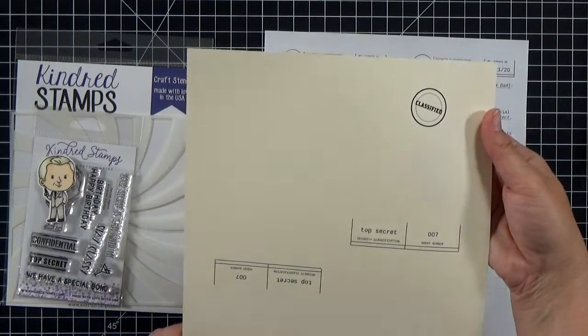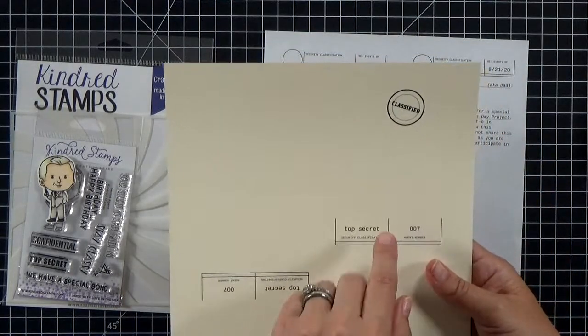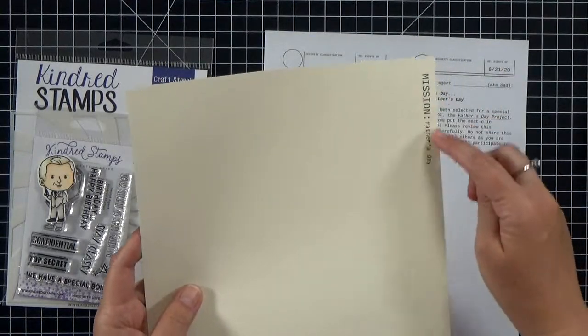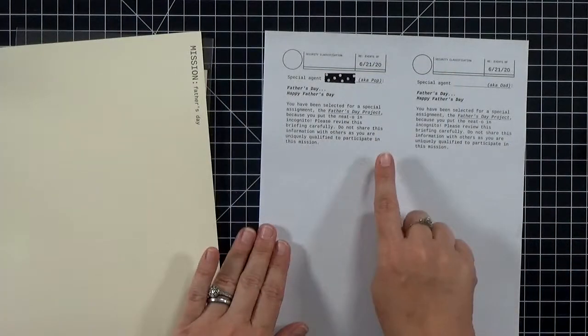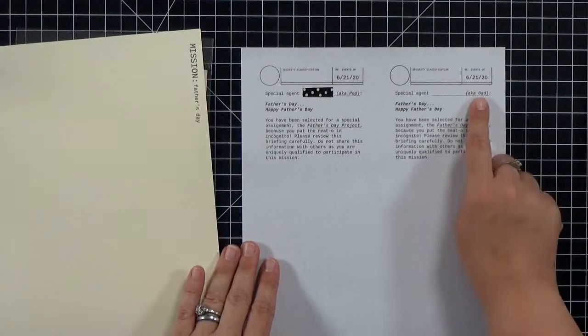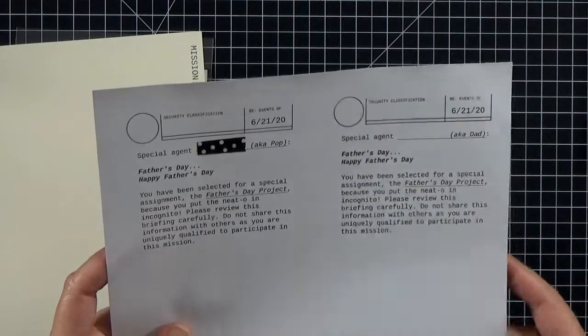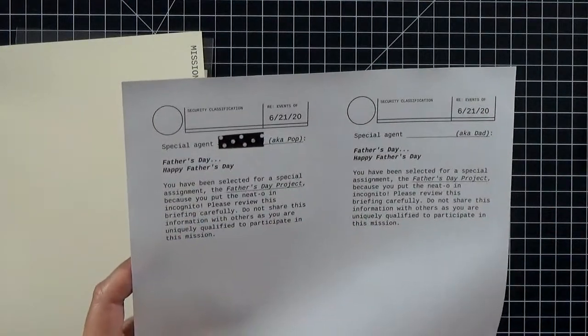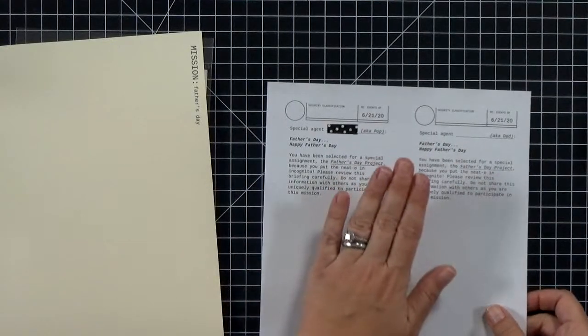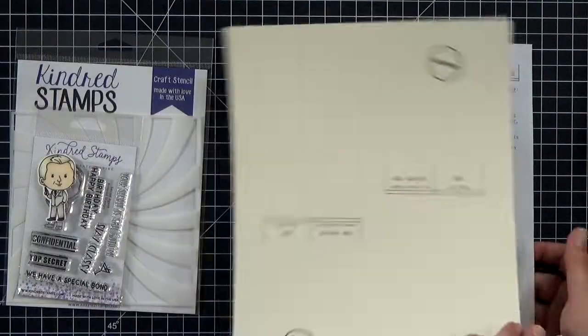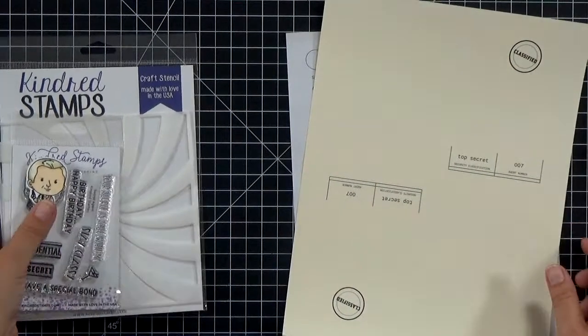For the manila folder, you're going to print the front side and then the back side. And then the little insert will get printed on just regular white copy paper. The manila folder, just grab anything that's kind of close to cream colored cardstock and that'll work. And notice that the little insert has a pop or a dad version. So whichever works best for you.